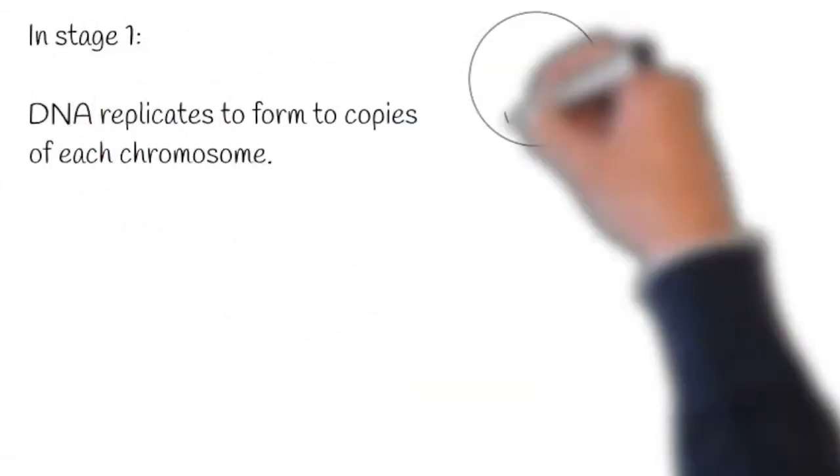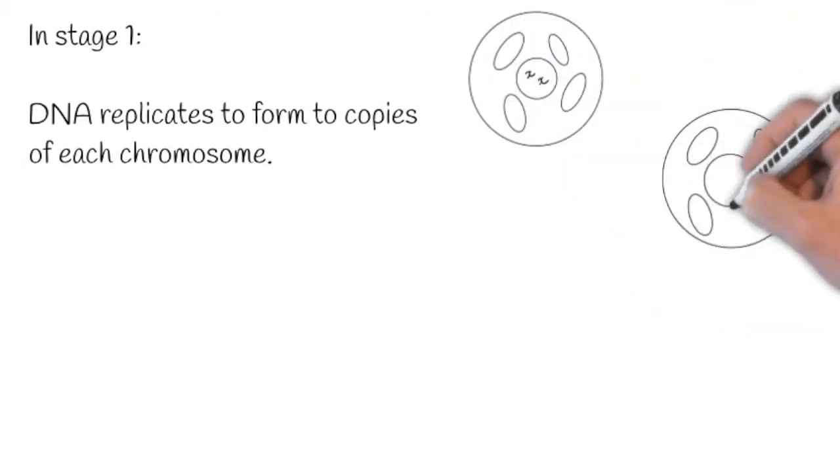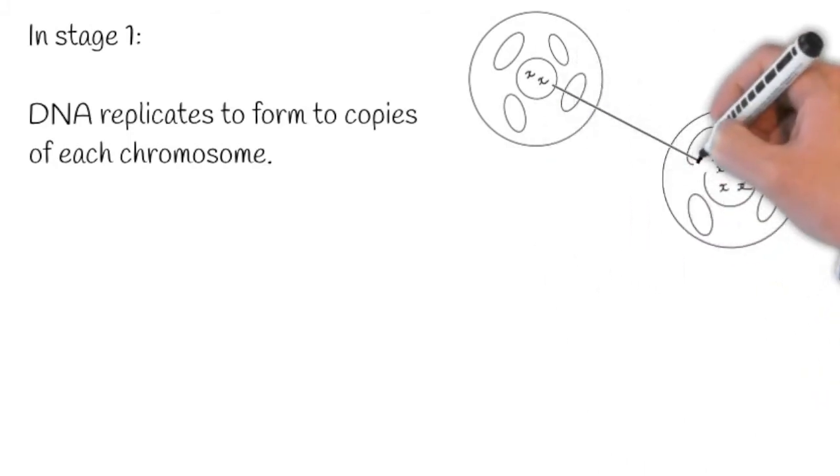In stage one, DNA replicates to form copies of each chromosome. As we can see here in this example, two chromosomes become four.